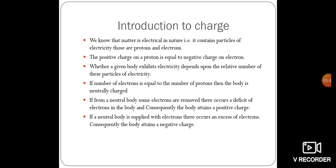Whether a given body exhibits electricity depends upon the relative number of particles of electricity. If the atom is becoming a charged particle, there is a difference in the number of protons or electrons. If the number of electrons equals the number of protons, then the body is neutrally charged.